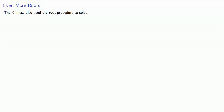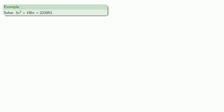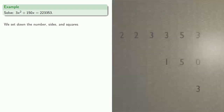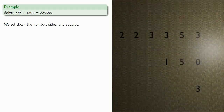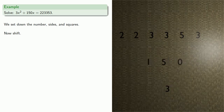The Chinese also use the root procedure to solve non-monic quadratics and quadratics with negative coefficients. For example, we can try to solve 3x² + 150x = 22353. We set down the number, sides, and squares, and shift once, twice. And so we see our solution has three digits.